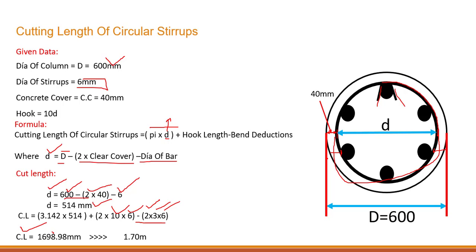So cut length will be equal to 1698.98 millimeter, meaning 1.70 meter. So this is how we can find out cut length of circular stirrup. Hope you really understand this session. I will see you in the next.